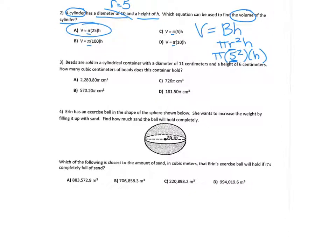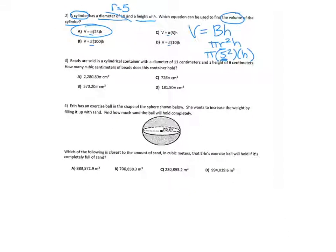Okay, number three. Beads are sold in a cylindrical container with a diameter of 11. Can I go ahead and change that diameter? To 5.5 and a height of 6 centimeters. How many cubic centimeters? If you see the words cubic centimeters, that tells you you're looking for volume. Also, words like hold. Like how much can fit inside of this container? We're looking for volume.